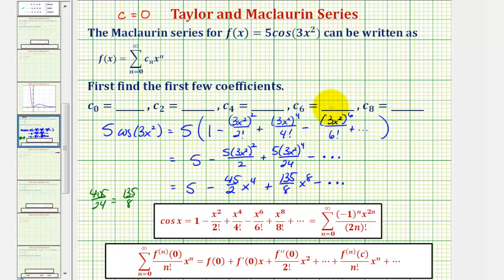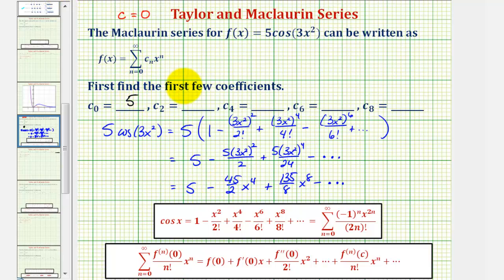Now we can find the coefficients that we need. C sub zero is the coefficient of the degree zero term, or the constant term, which is five. C sub two is the coefficient of the degree two term — there is no degree two term, so it's zero. C sub four would be negative 45 halves. C sub six would be zero, since there's no degree six term, and C sub eight would be 135 divided by eight.